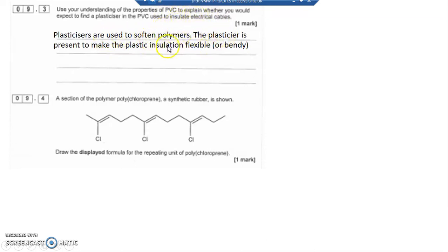A section of the polymer polychloroprene—a synthetic rubber—is shown below. So I've got carbons at each of these points here, I've got a double bond, and I've got some Cls. You need to recognize the repeating unit.